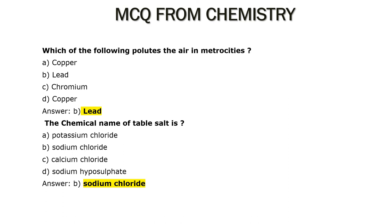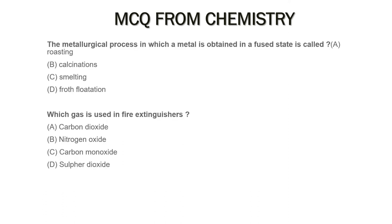The metallurgical process in which a metal is obtained in a fused state is called Option C: Smelting.